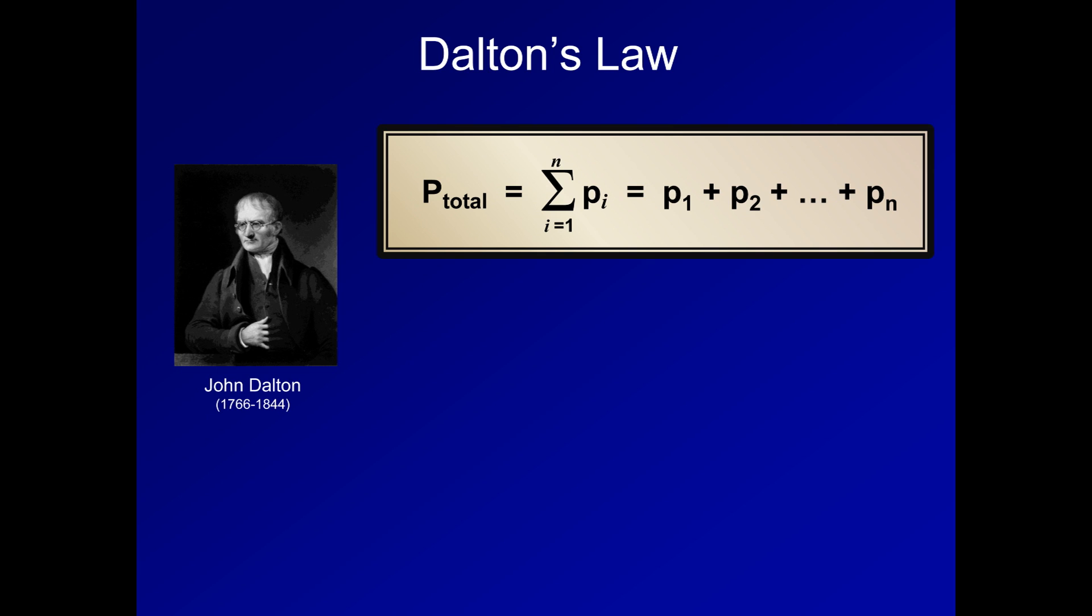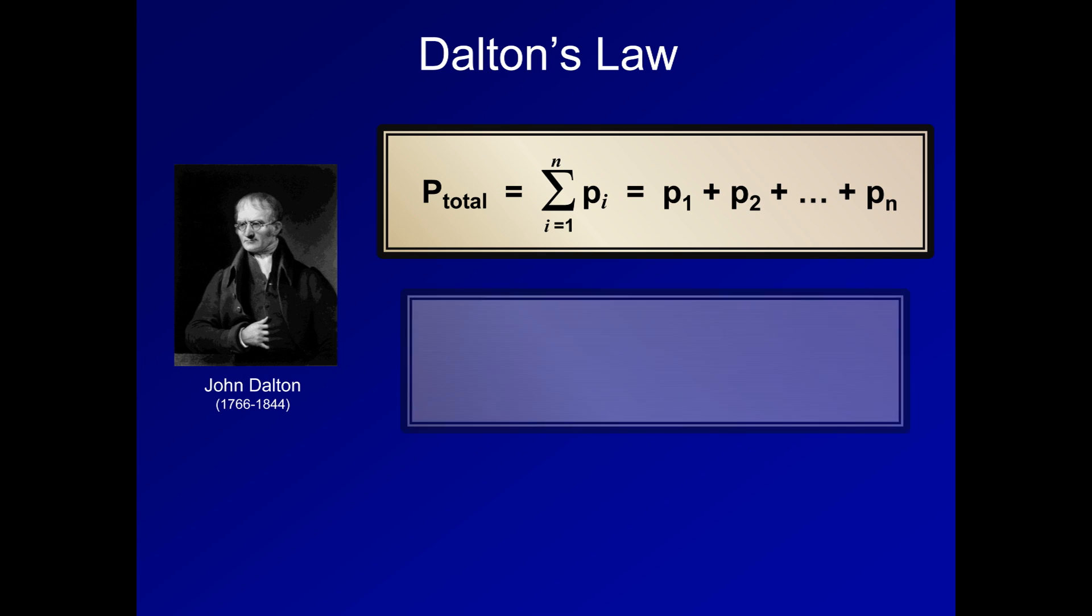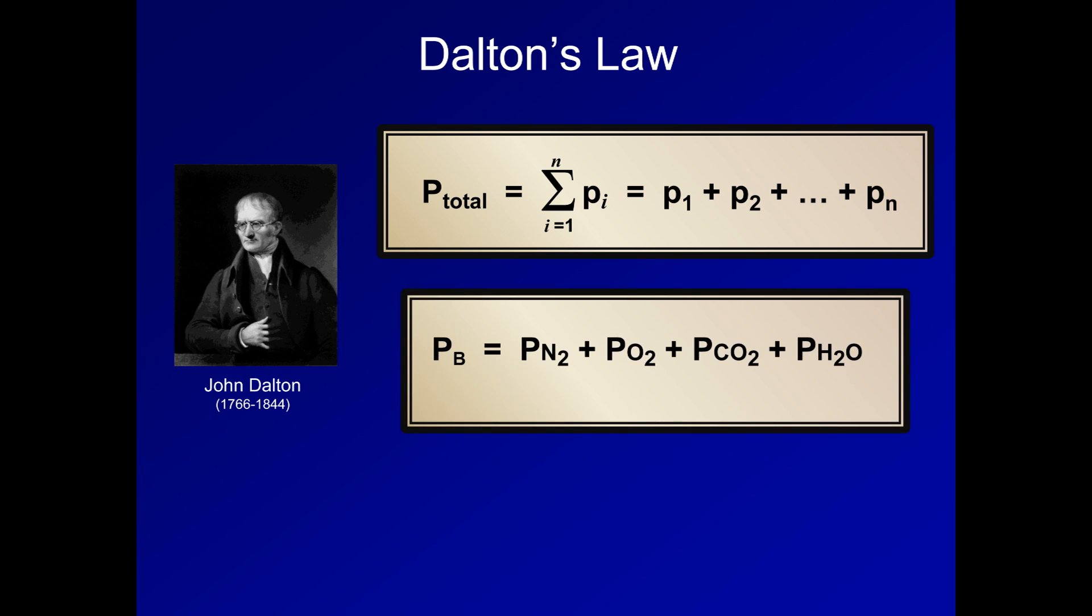For the purposes of respiratory physiology, there are normally only four gases present in significant quantities in the lungs. Thus, barometric pressure, commonly notated as P sub B, is equal to the sum of the partial pressures of nitrogen, oxygen, carbon dioxide, and water vapor. In the absence of applied positive pressure, such as would be seen by a patient on a mechanical ventilator or BiPAP, barometric pressure is equal to inspired pressure, denoted as P sub I.